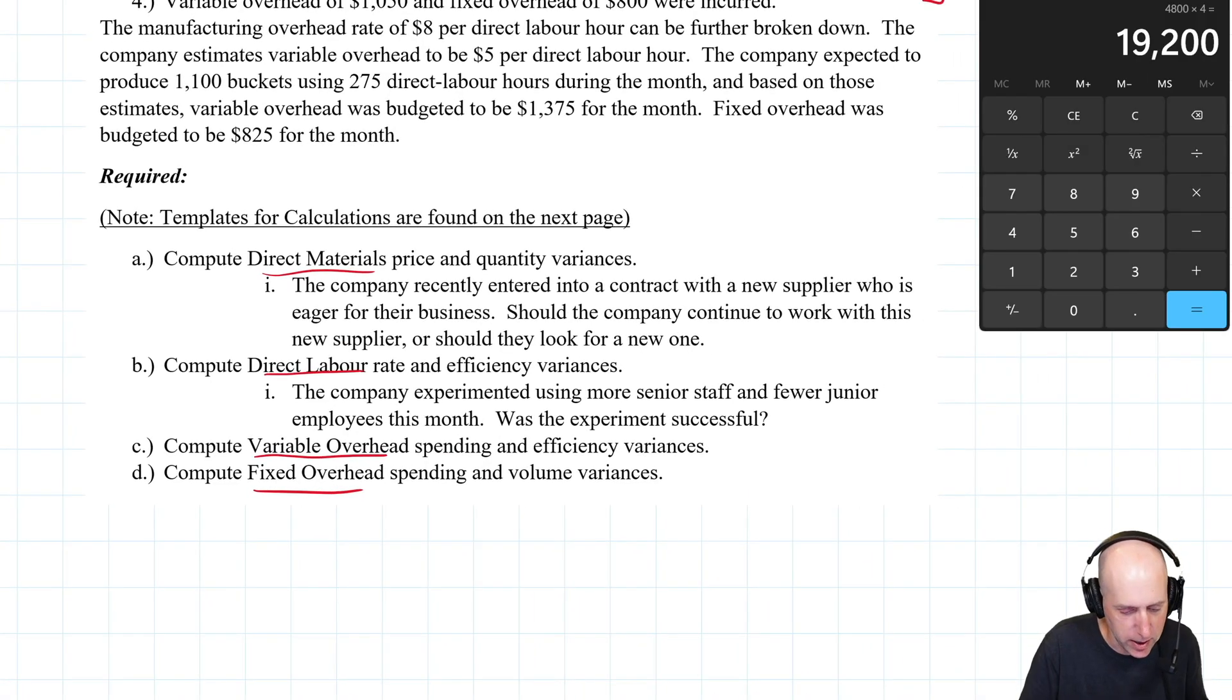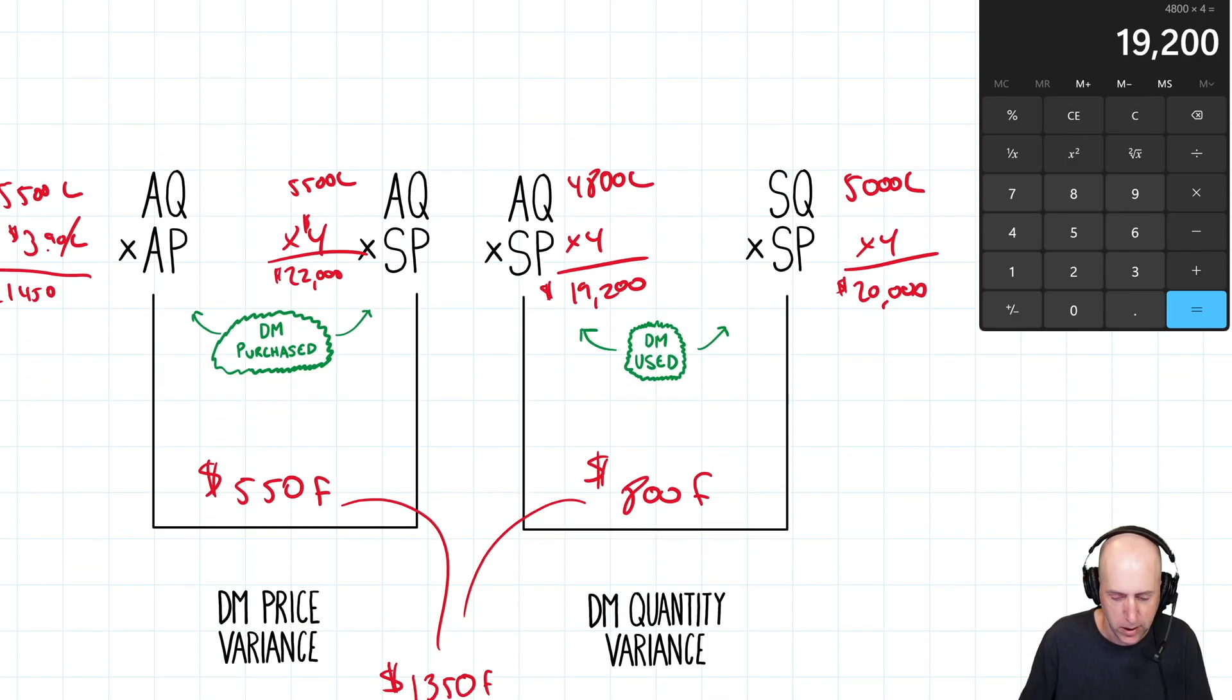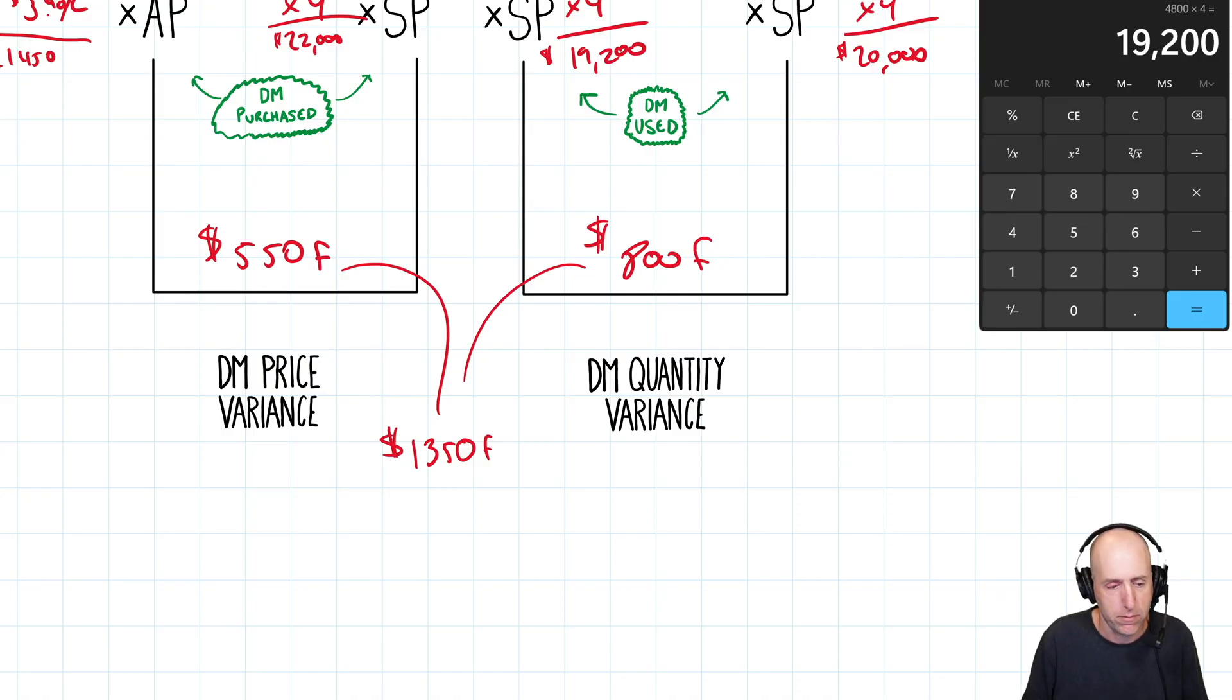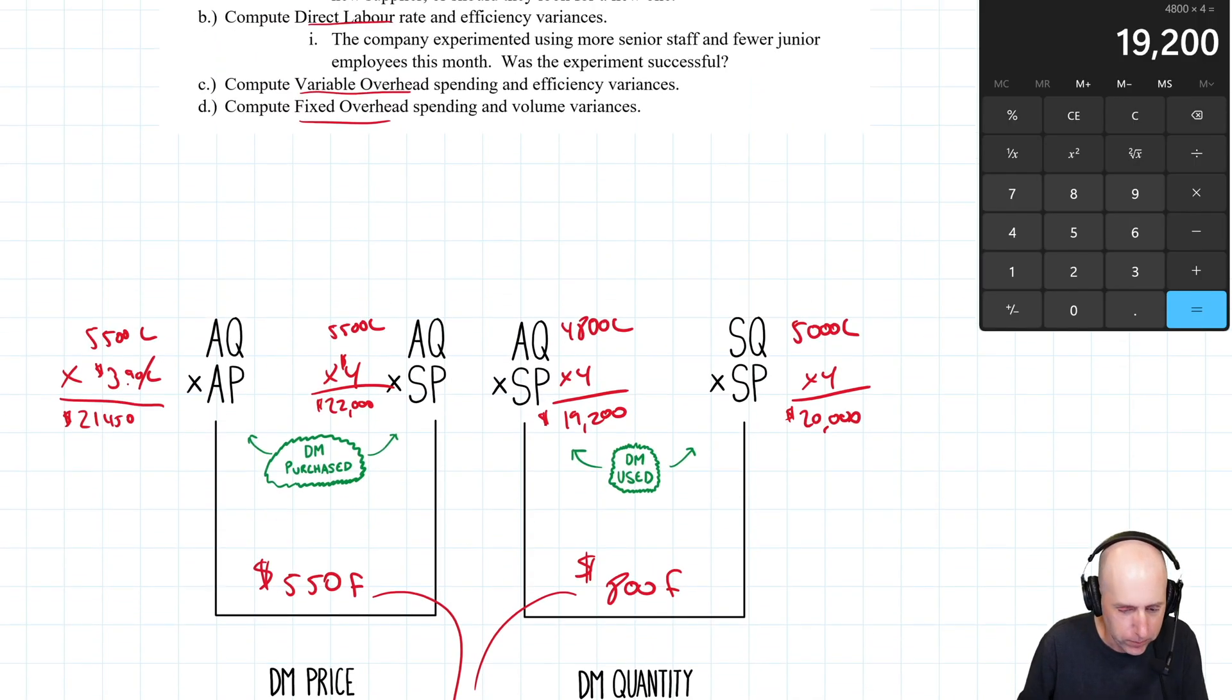So the problem says, the company recently entered into a contract with a new supplier eager for their business. Should the company continue to work with the supplier, or should they look for a new one? Well, first month in, this is pretty good. We would be very happy for this. We beat our standards. They gave us a better price and seemingly, possibly a better quality material because we used less of it. This is great news on the material front.